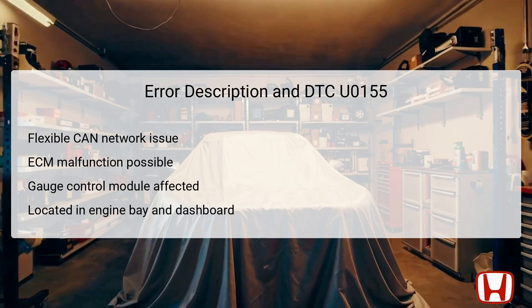This communication is vital for accurate readings on the dashboard gauges, including the tachometer, which represents engine RPMs. If the F-CAN system fails, it can lead to incorrect information being sent to the driver, or even a complete loss of communication. The ECM, located near the vehicle's engine, interprets sensor signals, while the gauge control module is typically installed behind the dashboard to showcase these metrics. Understanding the location and function of these components is crucial for diagnosing the root cause effectively.